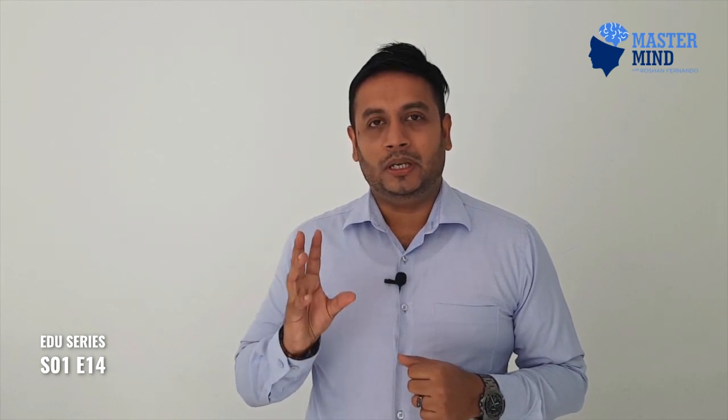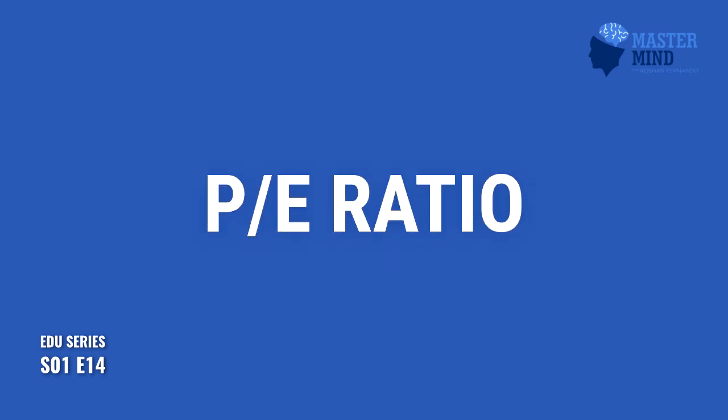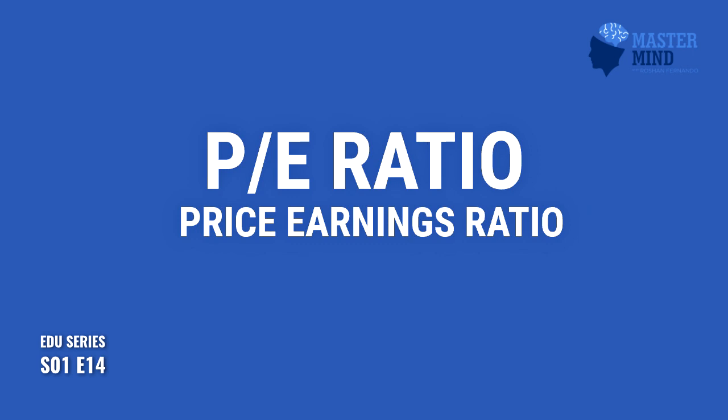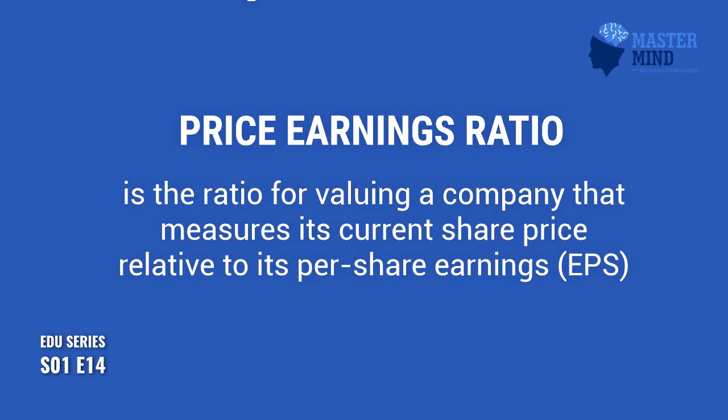We have to look at the PE ratio. So now we will explain how we are going to calculate the PE ratio of a listed company. We are going to learn what is a PE ratio and look at two ratios: one is net assets per share and PE ratio. The PE ratio is a ratio of valuing a company that measures its current share price relative to the earnings per share.